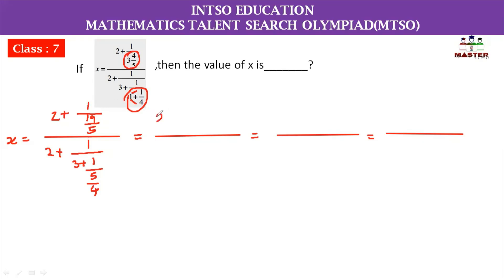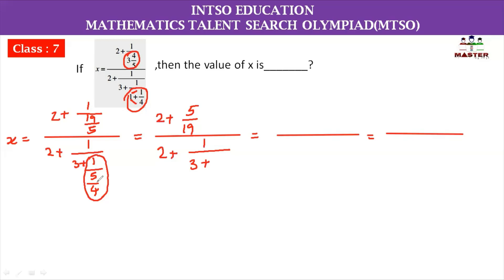The next step gives us 2 plus 1 whole divided by 19 by 5. The fraction 5 by 4 leads us to 5 divided by 4. In the denominator, 2 plus 1, 4 divided by 3 plus 1 divided by 5 by 4 — since we have the fraction 5 by 4, we receive 4 by 5.